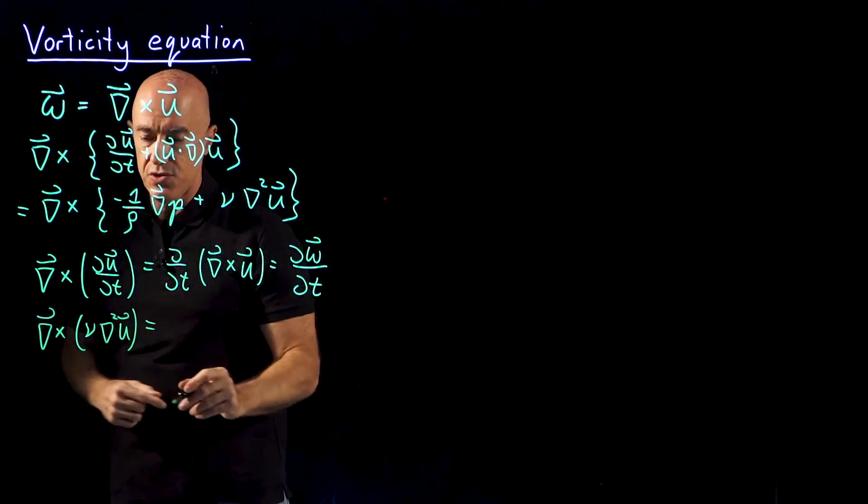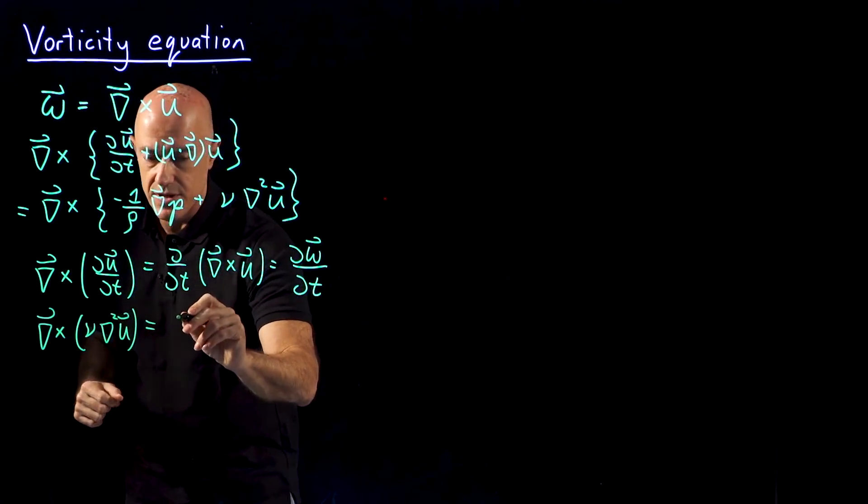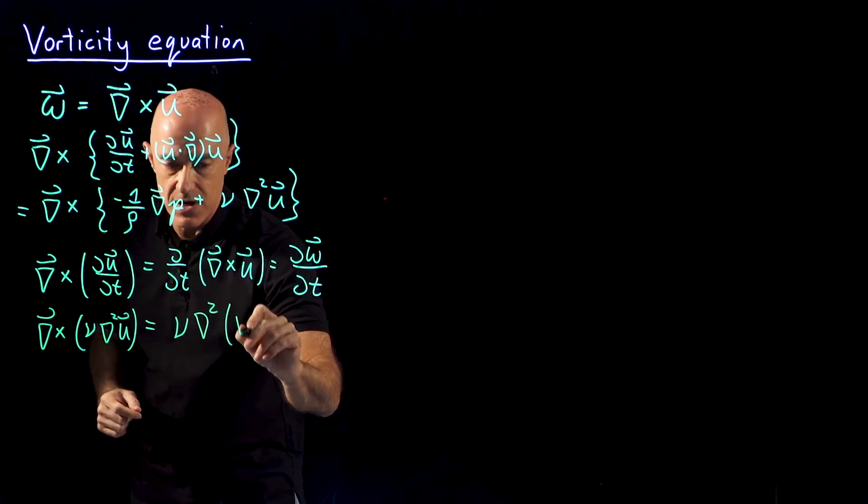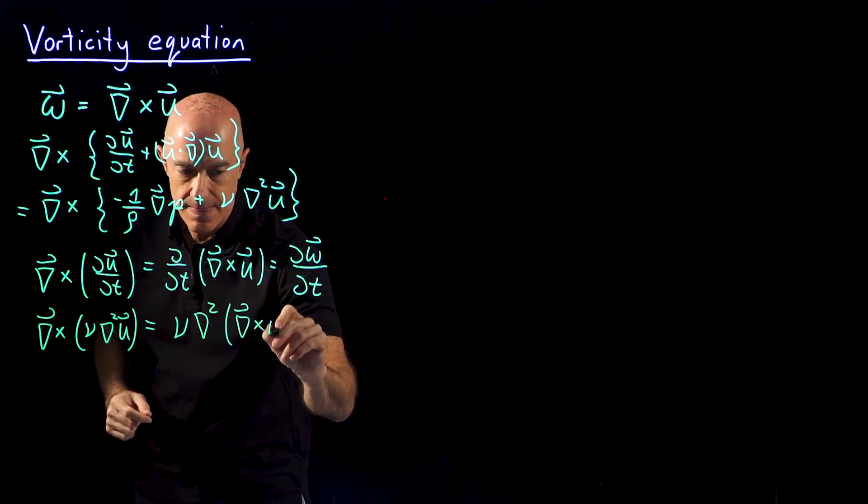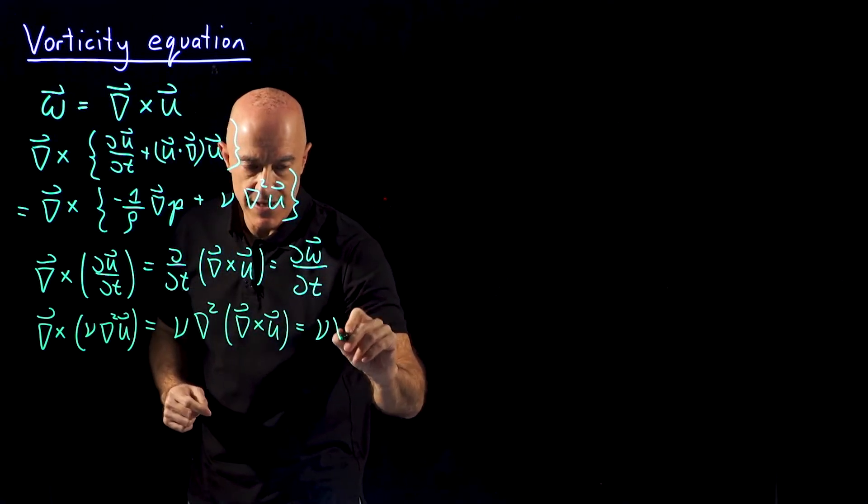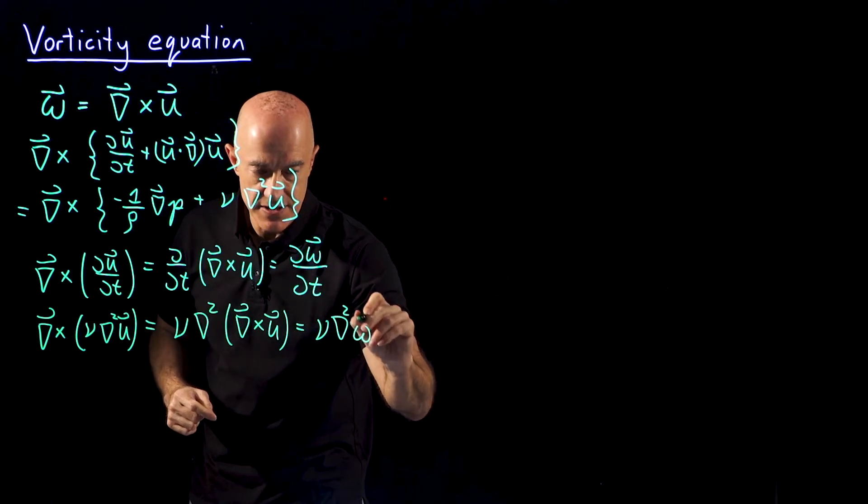Again, these two derivatives commute. So this is the constant nu times del squared of the curl of u, which is nu times del squared, the vorticity field.